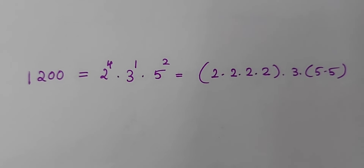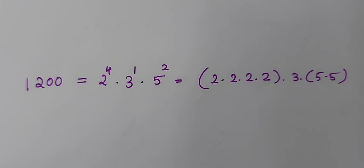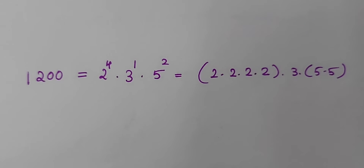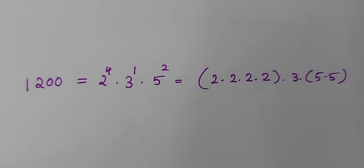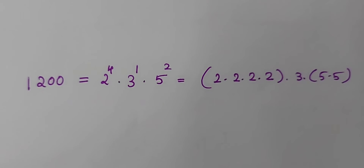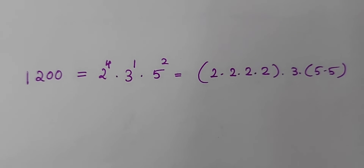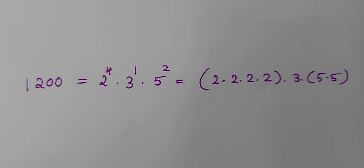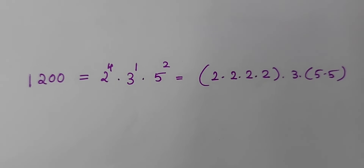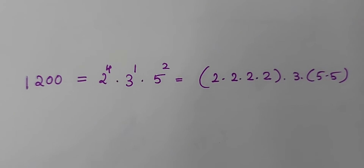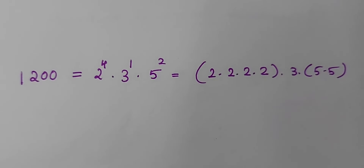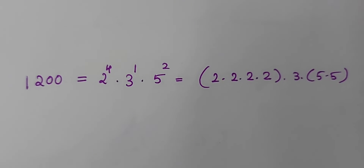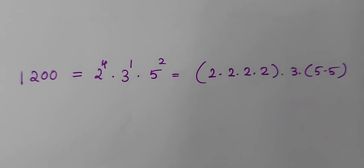1200 is greater than 1 and it can be expressed as a product of primes: 2 raised to 4 into 3 raised to 1 into 5 squared. So the existence part of the prime factorization comes here — it can be expressed as a product of primes. That is one aspect of the fundamental theorem of arithmetic, and it also says about the uniqueness: no matter what, there will always be four 2s, one 3, and two 5s in this factorization.